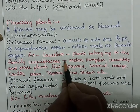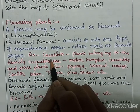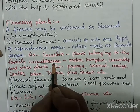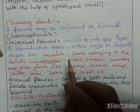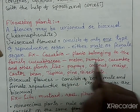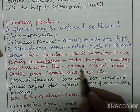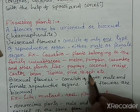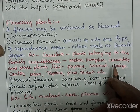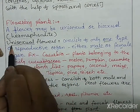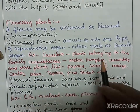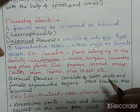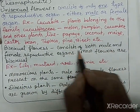Examples of plants with unisexual flowers include cucurbits — such as melon, pumpkin, and cucumber — as well as papaya, coconut, maize, castor bean, tapioca, pine, and birch. In these plants, male and female flowers are separate, which is why they are called unisexual flowers.